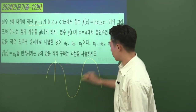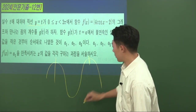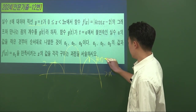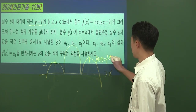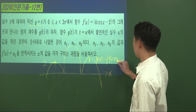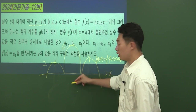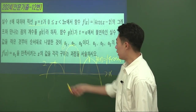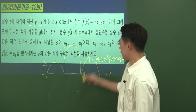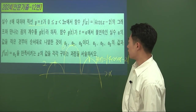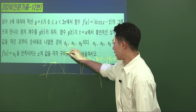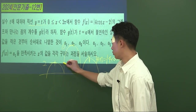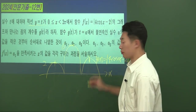참고로 올해는 1012명을 뽑습니다. 의예과 포함해서 1012명인데 의예과는 별도의 논술시험을 보고 있습니다. 지금부터 2024학년도 기출문제를 보도록 하겠습니다. 10번 한번 보겠습니다.